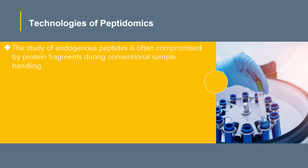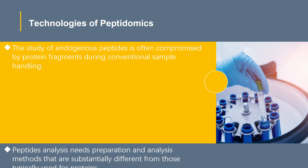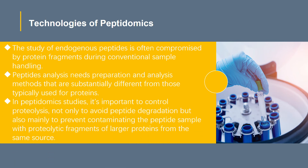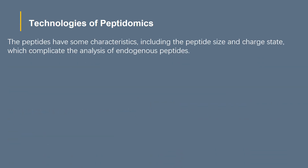The study of endogenous peptides is often compromised by protein fragments produced post-mortem during conventional sample handling. Peptide analysis needs preparation and analysis methods that are substantially different from those typically used for proteins. In peptidomics studies, it's important to control proteolysis, not only to avoid peptide degradation, but also mainly to prevent contaminating the peptide sample with proteolytic fragments of larger proteins from the same source. The peptides have some characteristics, including peptide size and charge state, which complicate the analysis of endogenous peptides.